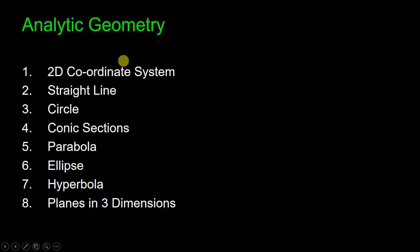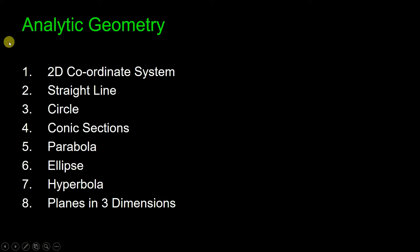So what are the things that we have already covered in analytic geometry? We have covered two-dimensional coordinate system, straight line, circle, conic sections, parabola, and ellipse. This is our second last topic for analytic geometry, which is hyperbola.